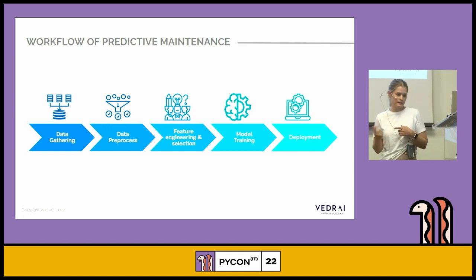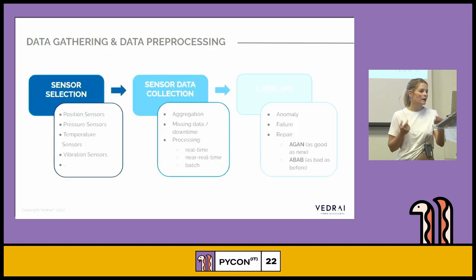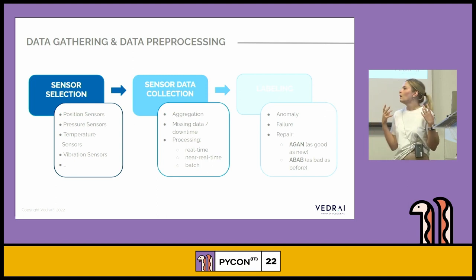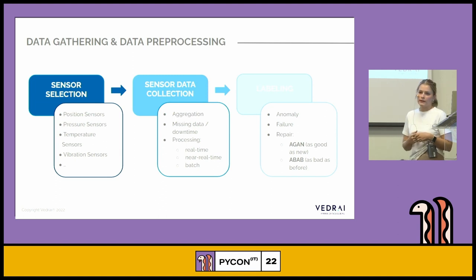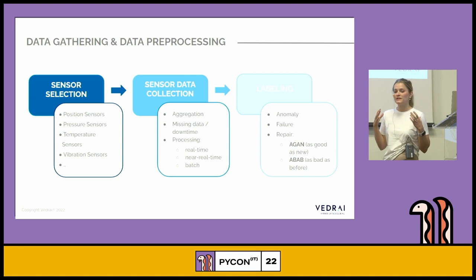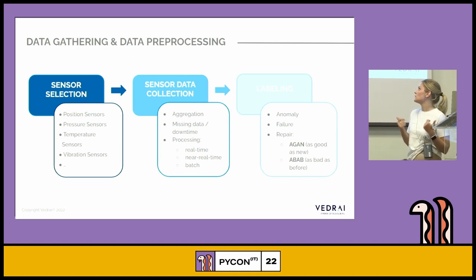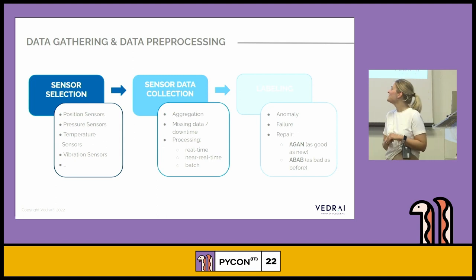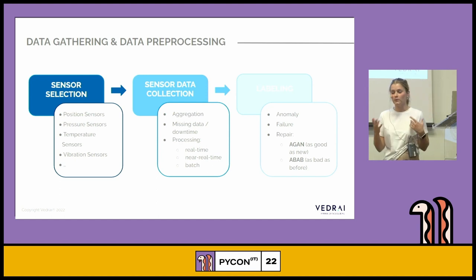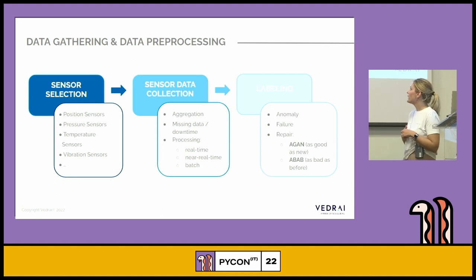The first three parts of the workflow are quite difficult. The first part is data gathering and processing. The first challenge is sensor selection — machines have many sensors including positional, pressure, temperature, and more — and we really need a technical engineer to understand which are useful for our model. The second challenge is sensor data collection, which is a great pain practically. We have to understand the aggregation level: one second, five seconds, one day, or one month.